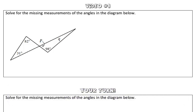In this problem, we are asked to solve for the missing measurements of the angles in the diagram below. So taking a look, we have two different triangles. We have this triangle on the left, and we also have this triangle on the right.